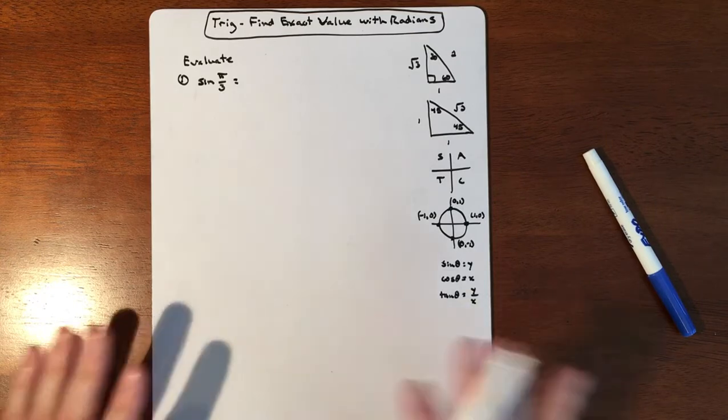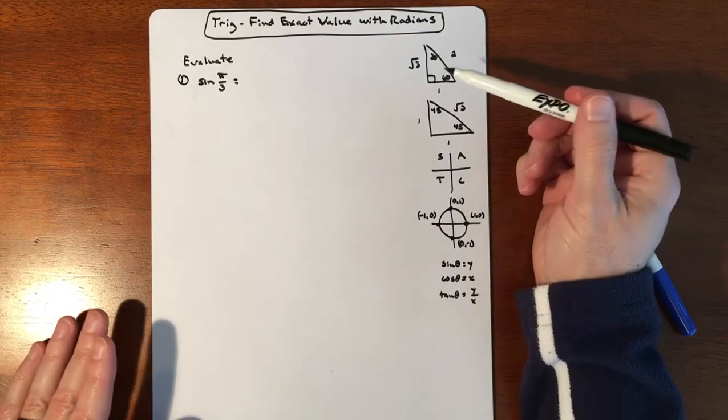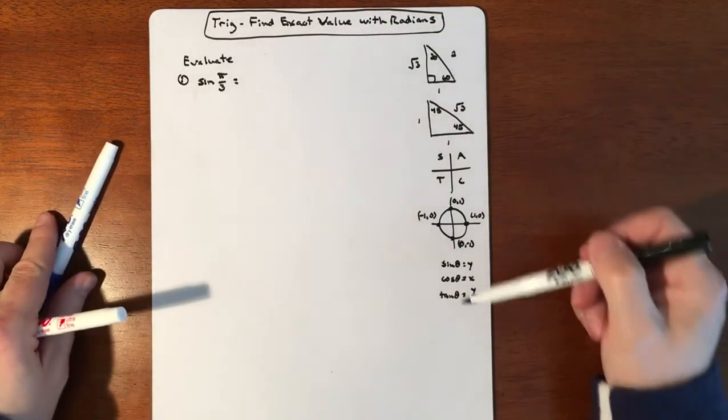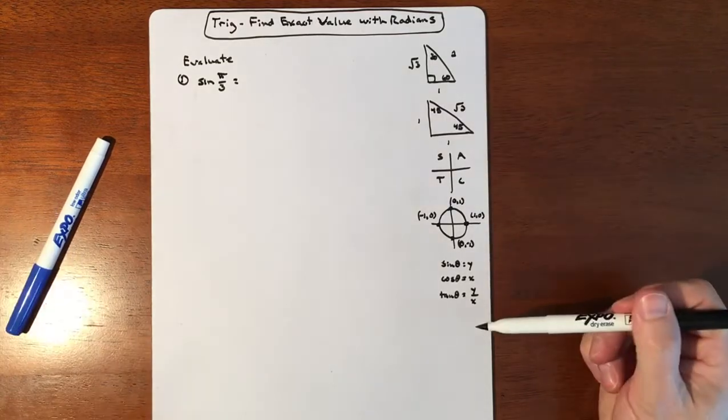So we're trying to do sine of pi over 3. This is all meant to be non-calculator and rather than the unit circle and all the different numbers associated with it, I refer to this information and this is my unit circle.